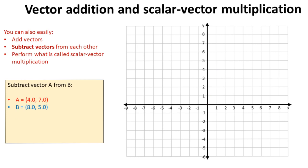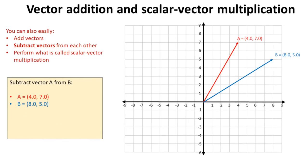Subtracting vectors is equally as simple. You take the two vectors A and B. Let's see what they look like on our graph. So there's our two vectors.